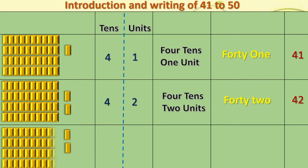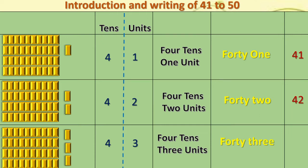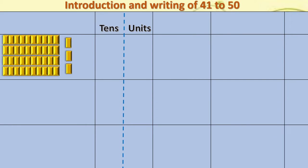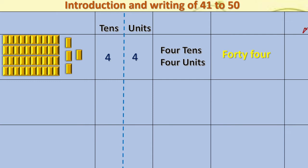Next, we will add 1 more unit to 42. So, 4 tens and 3 units. And the number formed is 43 — that is 40 and 3. We will move to next. Here also, we can see the slabs of chocolates and 3 singles. Dear children, we are going to add 1 more part. So, we got 4 tens and 4 units. The number formed is 44 — that is 40 and 4.